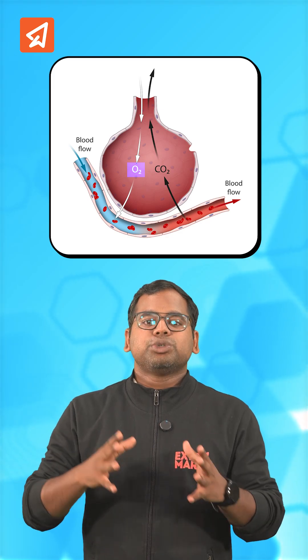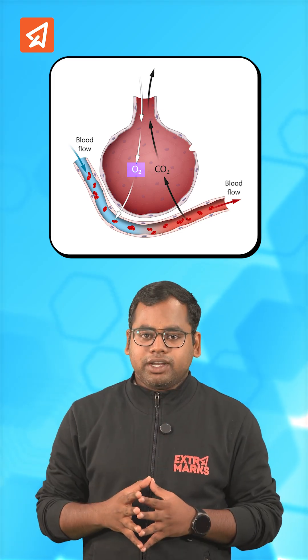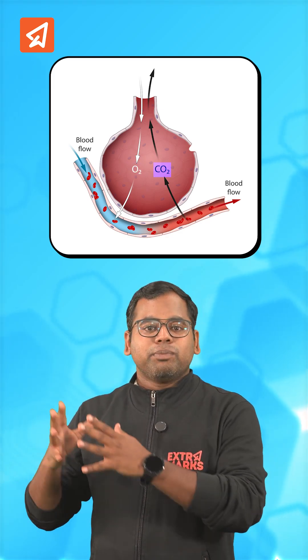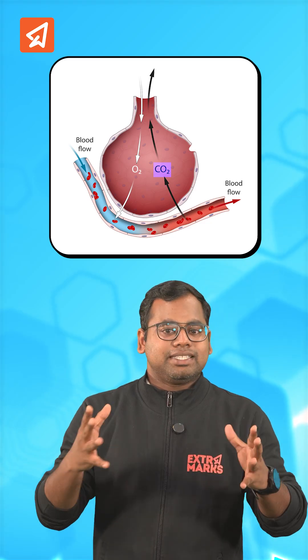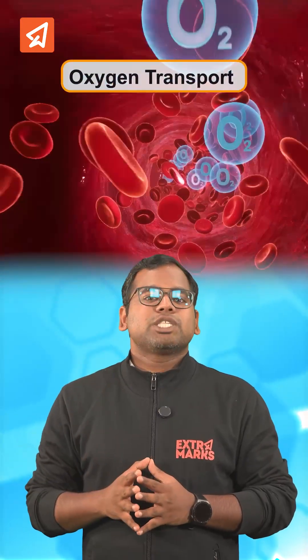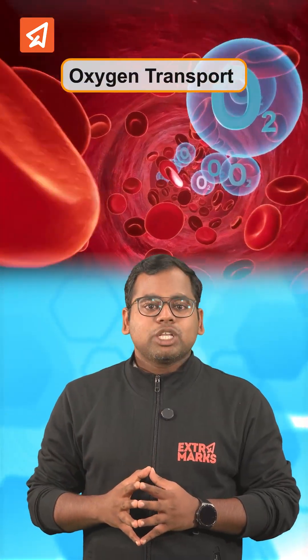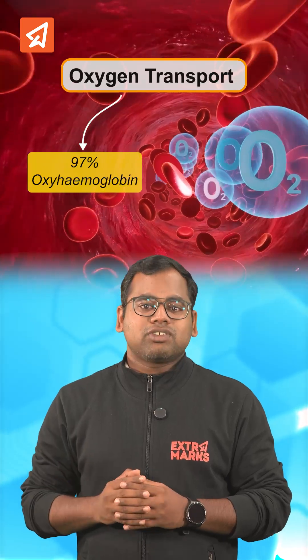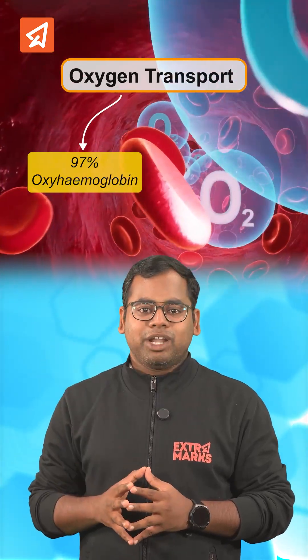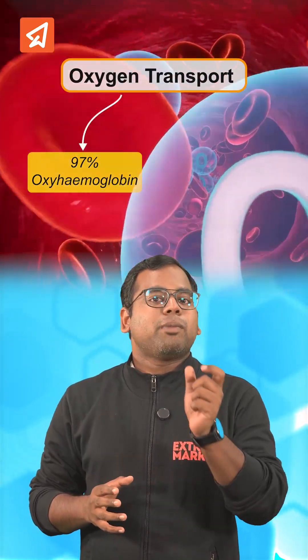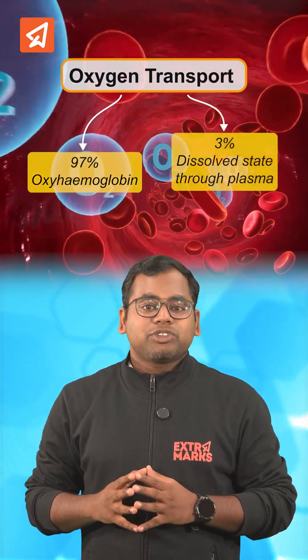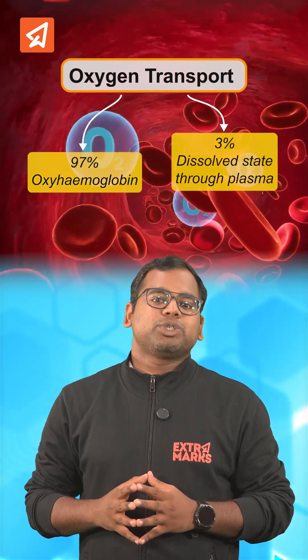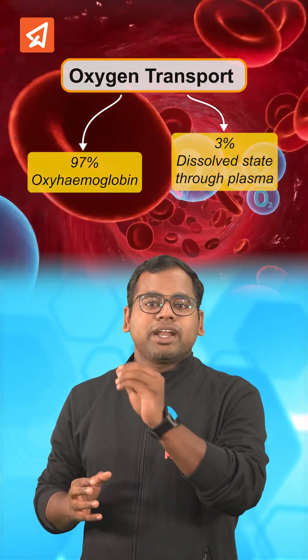In the human body, oxygen is transported from the lungs to different parts of the body, while carbon dioxide is taken from different parts of the body to the lungs for exhalation. So how does this happen? 97% of oxygen is transported with hemoglobin in the form of oxyhemoglobin, while the remaining 3% is transported in the plasma in a dissolved state.